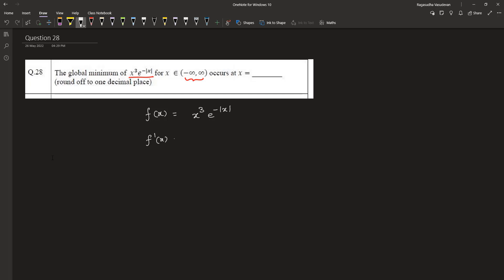f dash of x is equal to 3x square times e to the power minus mod x minus x cube e power minus mod x. 3x square e power minus mod x equals x cube times e to the power minus mod x. Let us cancel the common terms. Therefore, at x equals 3 the slope is 0.